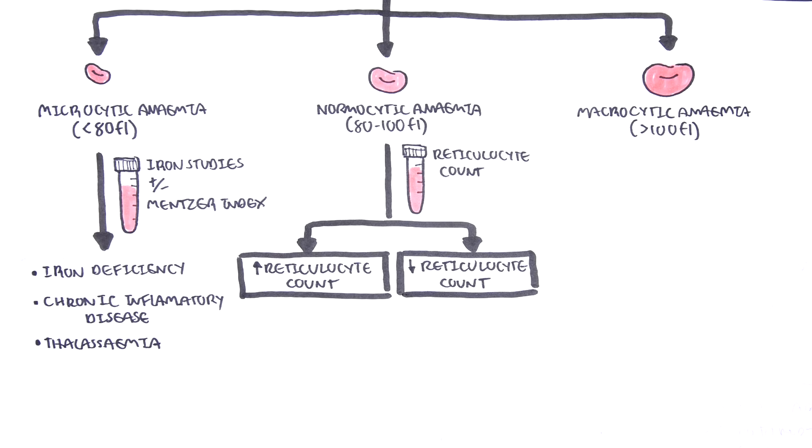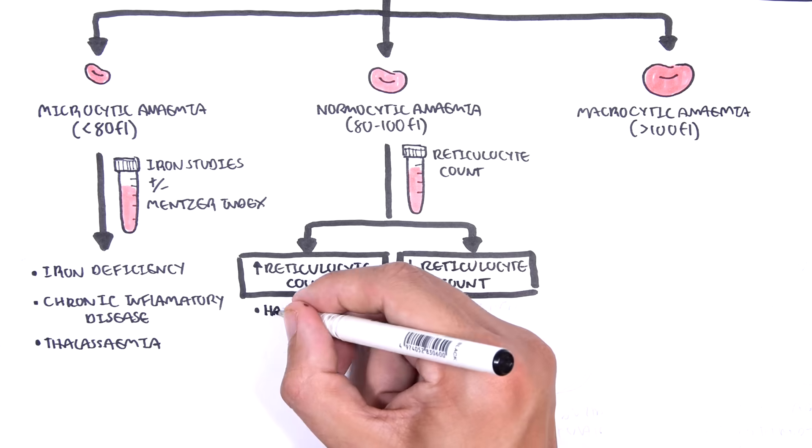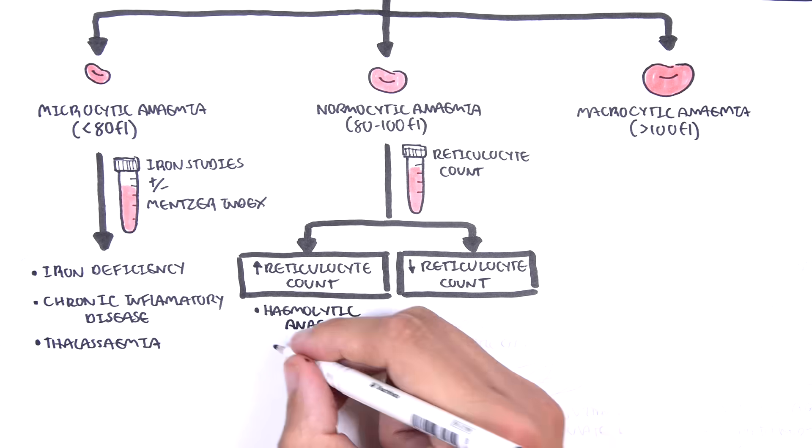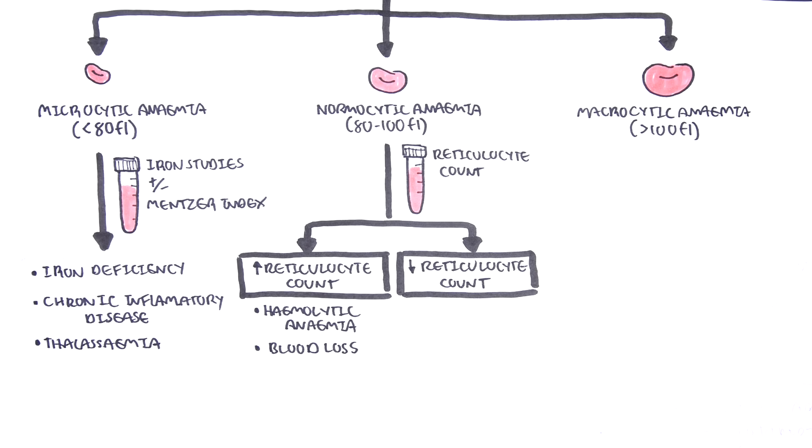If it's a high reticulocyte count, this can mean a hemolytic anemia or blood loss, because the body is trying to compensate and produce more reticulocytes to replenish the red blood cells that are lost.